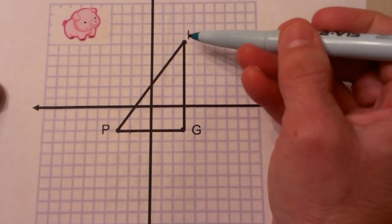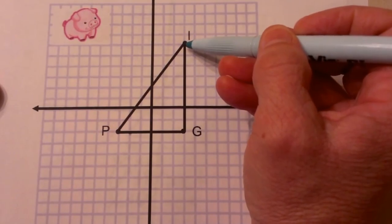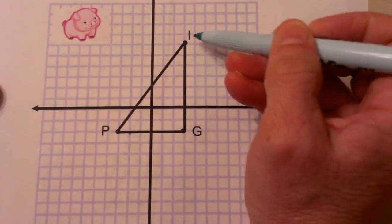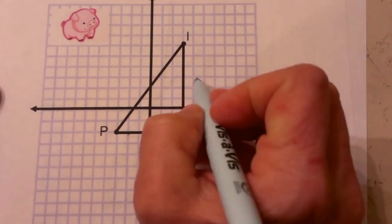Well, the vertical side which is IG is very easy to find the distance of. All you need to do is count the blocks. I'm going to count from I to G: 1, 2, 3, 4, 5, 6, 7, 8, so that's 8 units long.